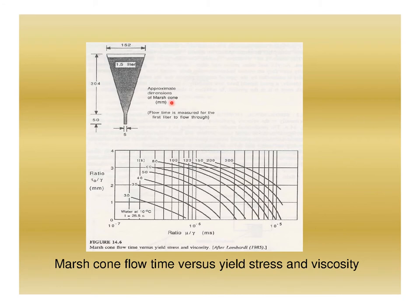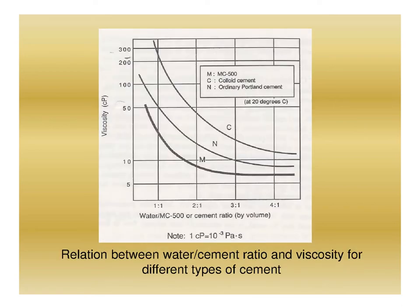The Marsh cone is used to determine the viscosity of the grout, and a chart is used to determine the viscosity from the measured values. A figure also shows the relation between water-cement ratio and viscosity for different types of cement.